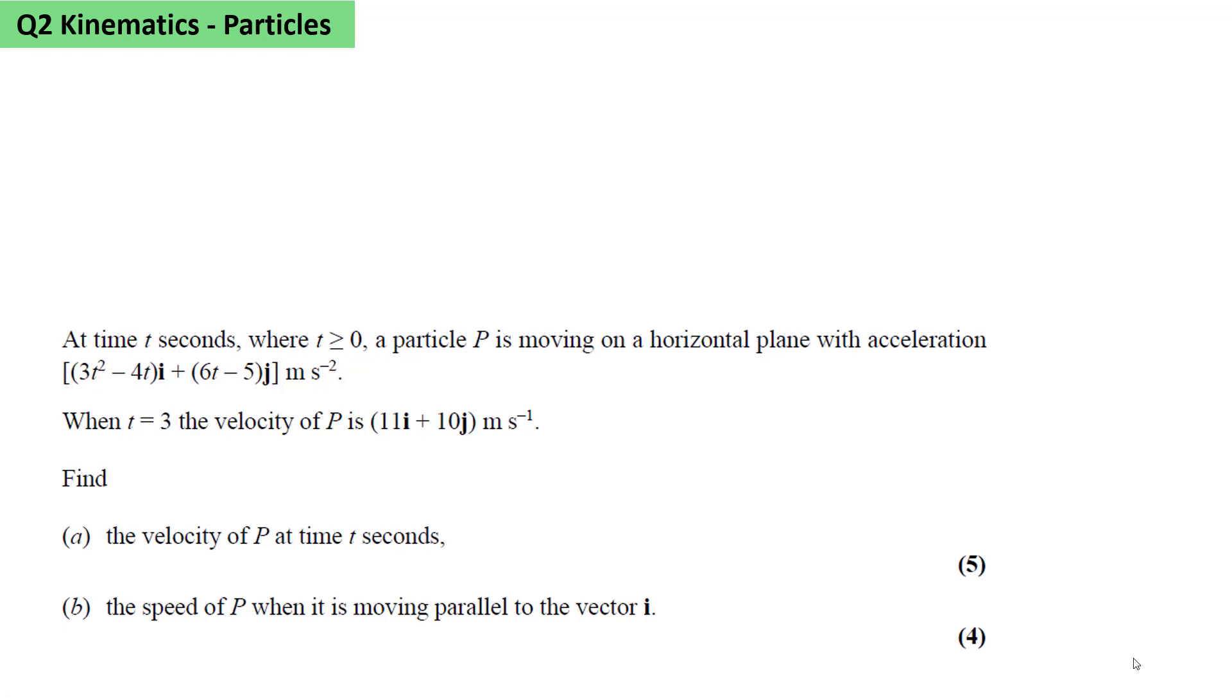Kinematics question 2. At time t seconds, where t ≥ 0, a particle P is moving on a horizontal plane with acceleration (3t² - 4t)i + (6t - 5)j. This tells us it's not a problem about constant acceleration. It's one where we'll need to use calculus.